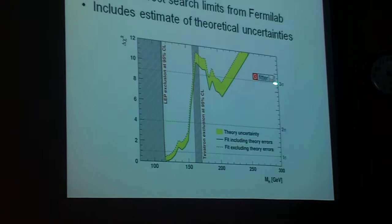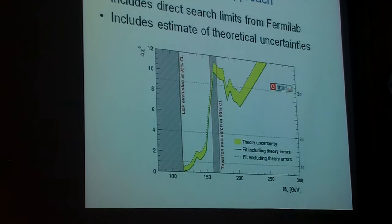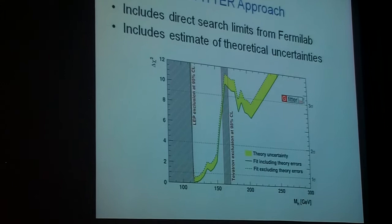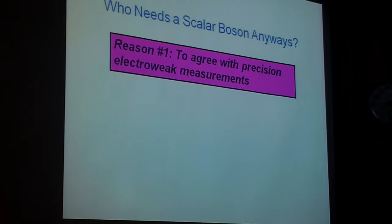So we expect that if the minimal standard model with a single scalar is true, that this scalar is relatively light. So in my pragmatic approach, who needs this scalar boson? Well, you need it to agree with all the electroweak precision measurements because all this data fits this theory perfectly.